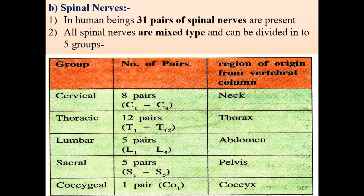The lower back is the lumbar region. It gives rise to five pairs of spinal nerves, symbolized as L1, L2, L3, L4, and L5, where L stands for lumbar. These originate from the lower back or abdominal region.